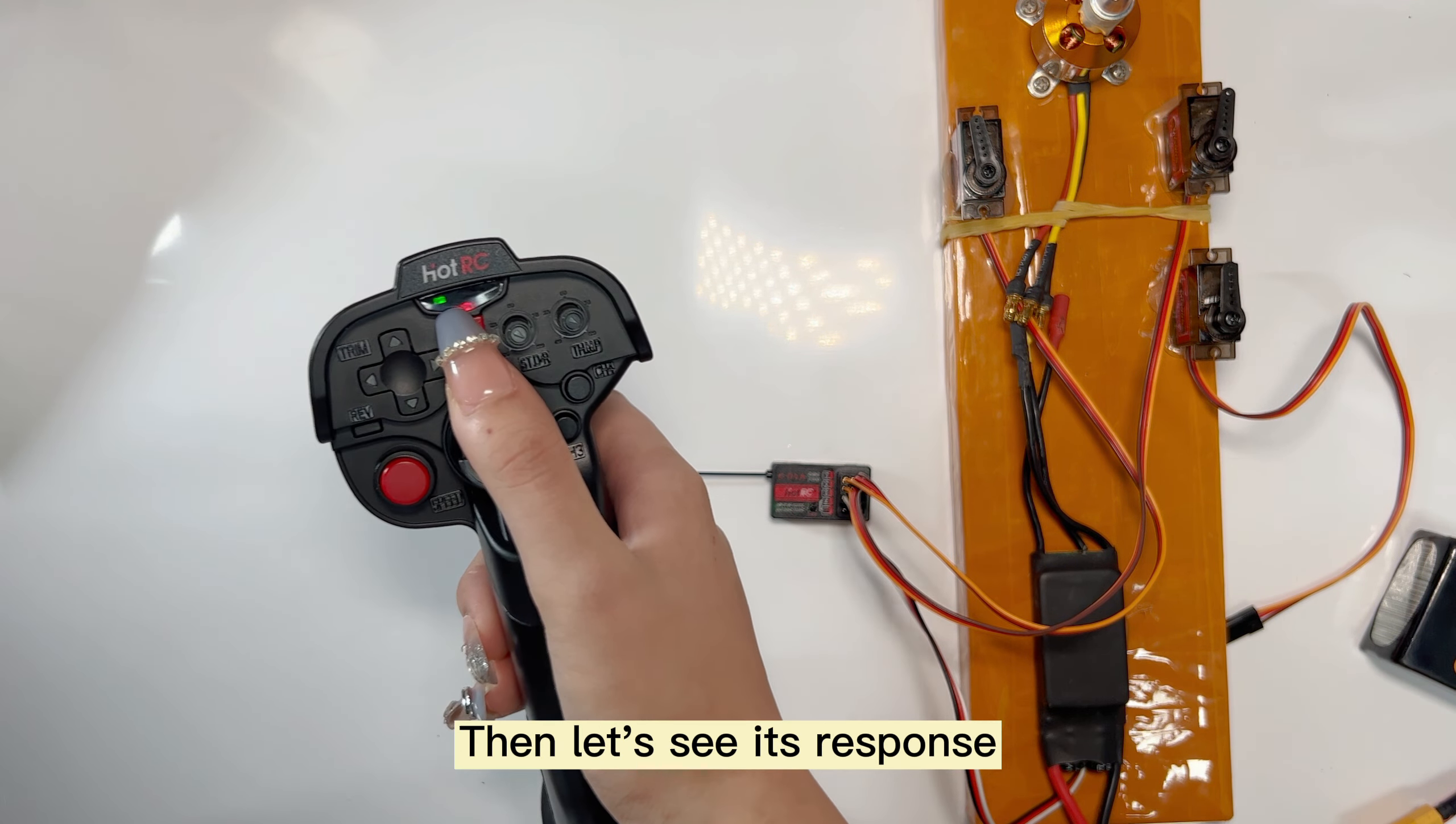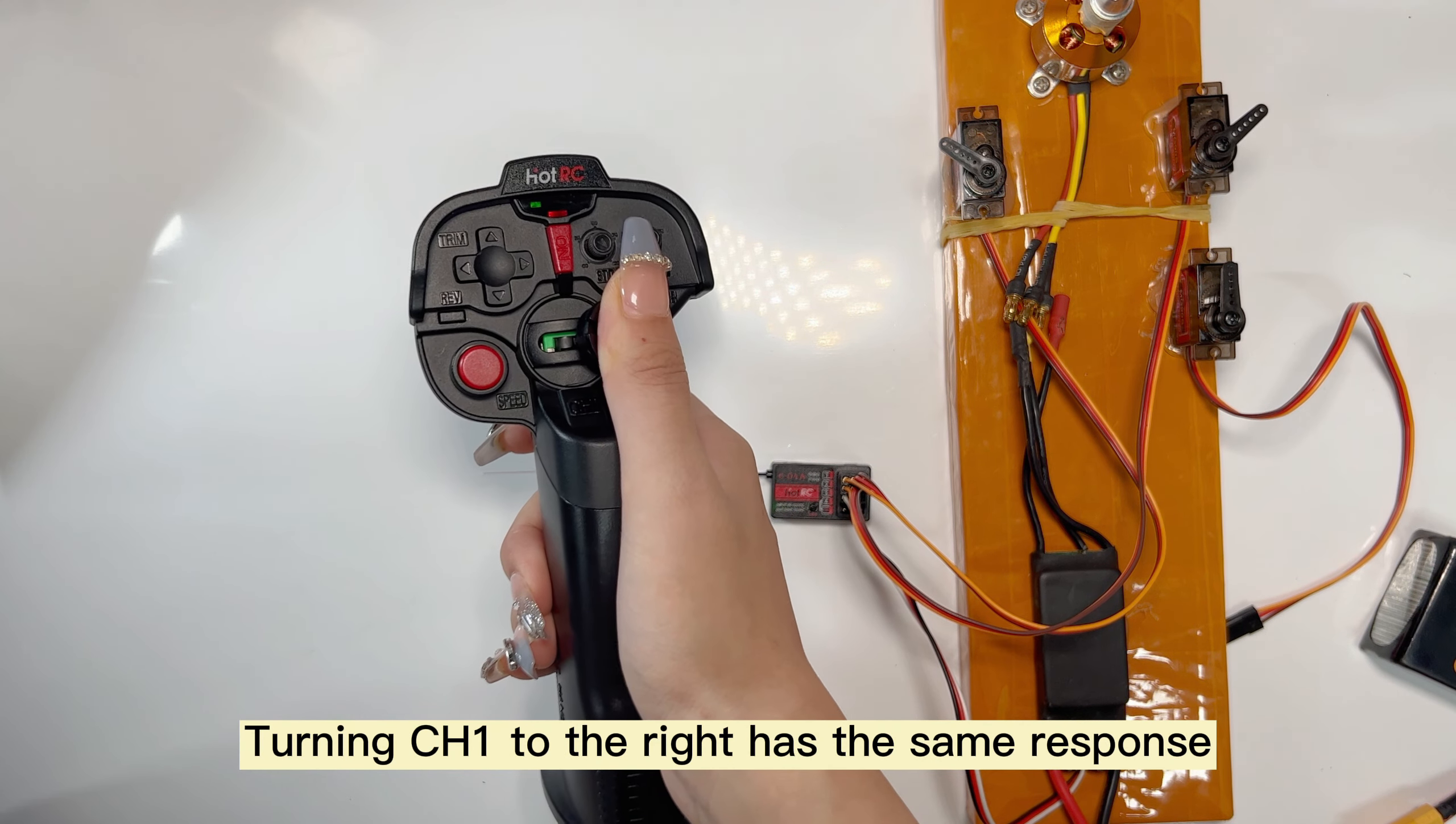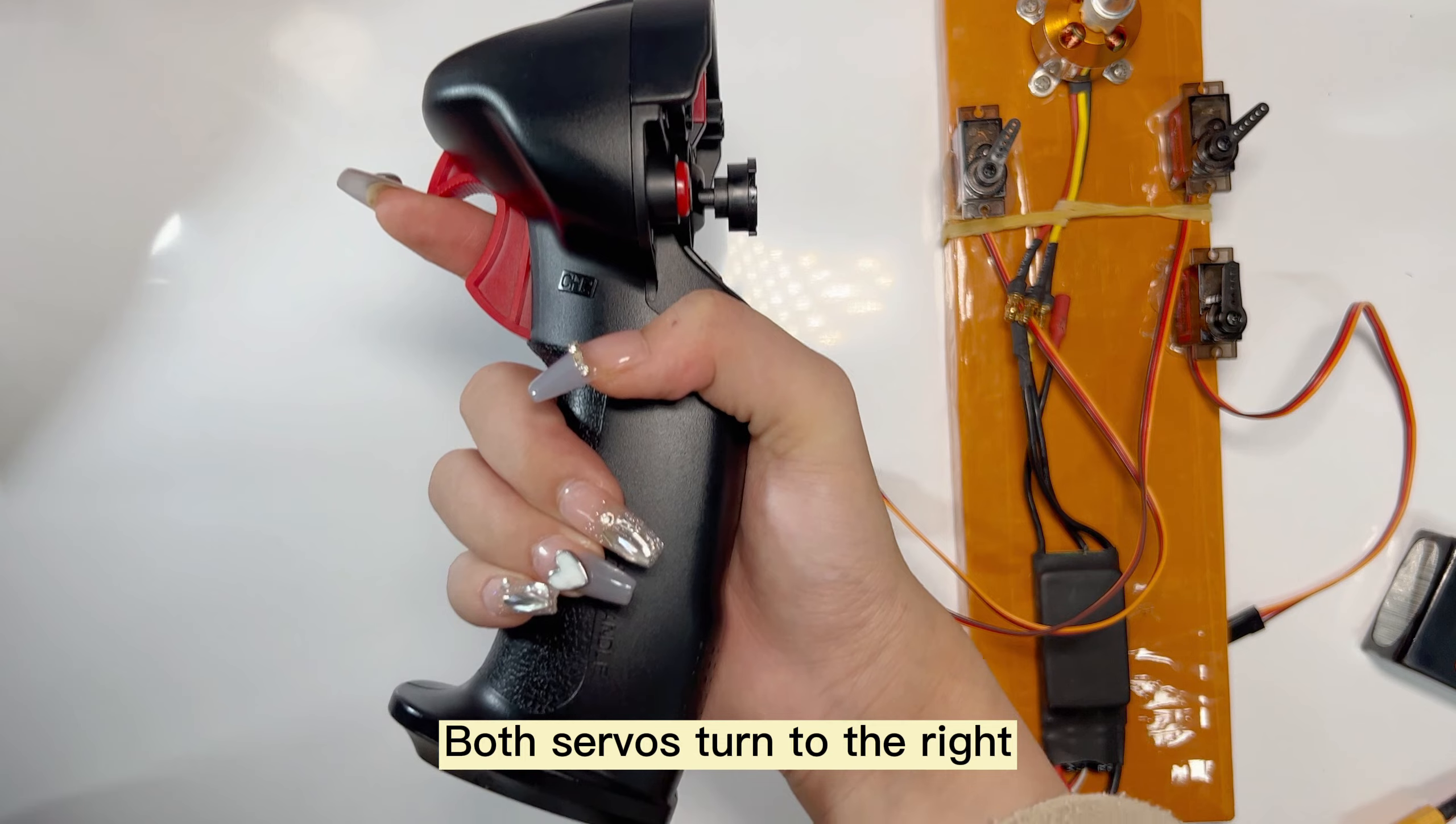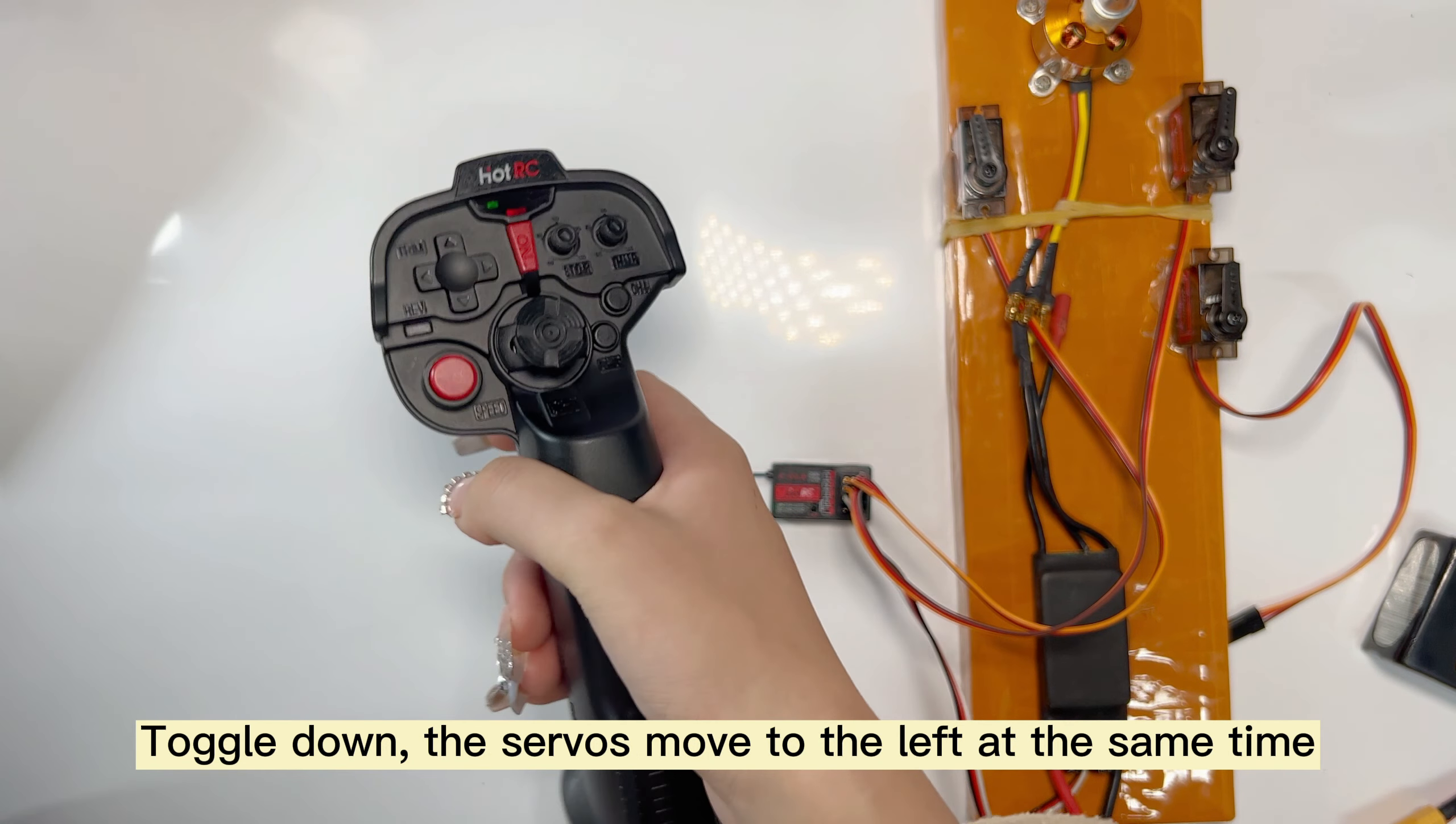Let's see its response. CH1 turn left. You can see the servos of both channels start to operate at the same time. Turning CH1 to the right has the same response. Moving CH2 forward, both servos turn to the right. Push down, the servos move to the left simultaneously.